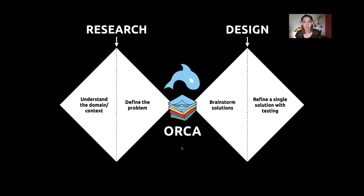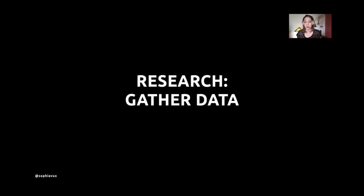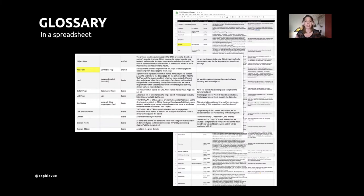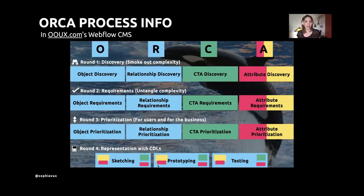What kind of research did I do for this particular process? What kind of data could I give to Aaron and Bob to work their magic on? One thing was this glossary and spreadsheet with alternate terms — about 76 terms categorized by things like artifact, activity, basics, or inheritance, so there was some categorization. Then we have the process itself: the pillars of ORCA — objects, relationships, CTAs, and attributes — and the multiple rounds. ORCA is an iterative process.